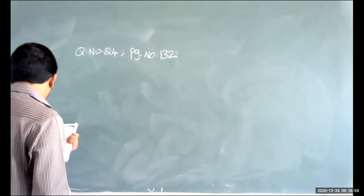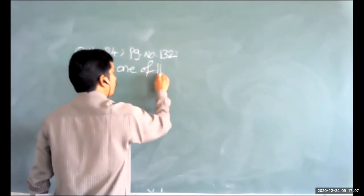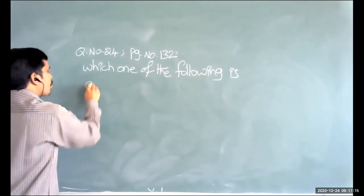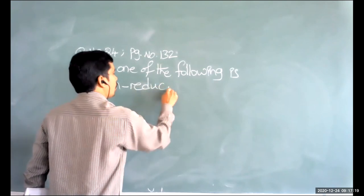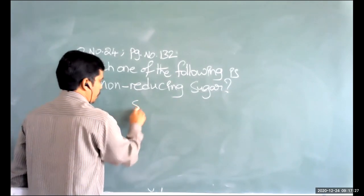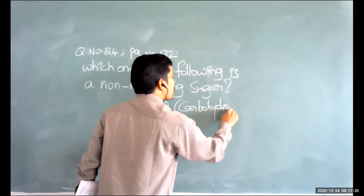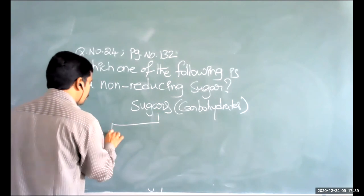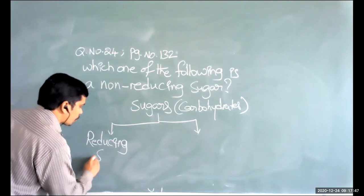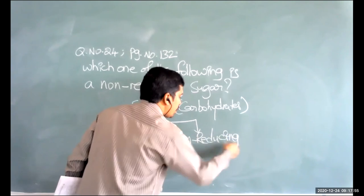Which one of the following is a non-reducing sugar? Carbohydrates are classified into two types based on their ability to reduce Tollens' reagent and Fehling's solution: reducing sugars and non-reducing sugars. All carbohydrates that can reduce Fehling's solution and Tollens' reagent are called reducing sugars.